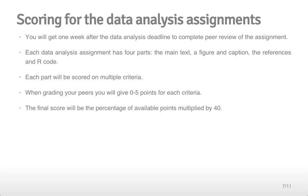A little bit about scoring for the data analysis assignments. You will get one week after the data analysis deadline for each data analysis to complete the peer review of the assignment. You will have multiple data analyses to grade for your peers. Each data analysis assignment has four parts: the main text, a figure and a caption, the references and R code. Each part will be scored on multiple criteria. And when grading your peers, you will give 0-5 points for each criteria. The rubric is explained in the peer assignments when they become available, including what each of the points 0-5 means for each criteria. The final score will be the percentage of available points multiplied by 40, which is the total number of points available for a data analysis.